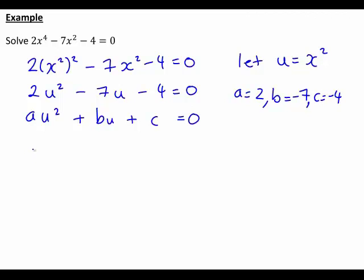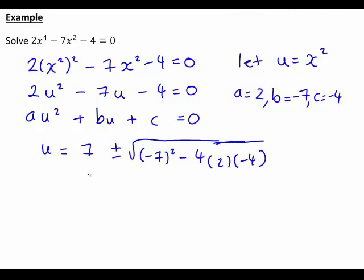So using the quadratic formula, u is equal to negative b, which will be negative 7, just giving 7, plus or minus the square root of b squared, so that will be negative 7 squared, minus 4ac, which will be 4 times 2 times negative 4, all divided by 2a. So in this case, divided by 2 times 2.